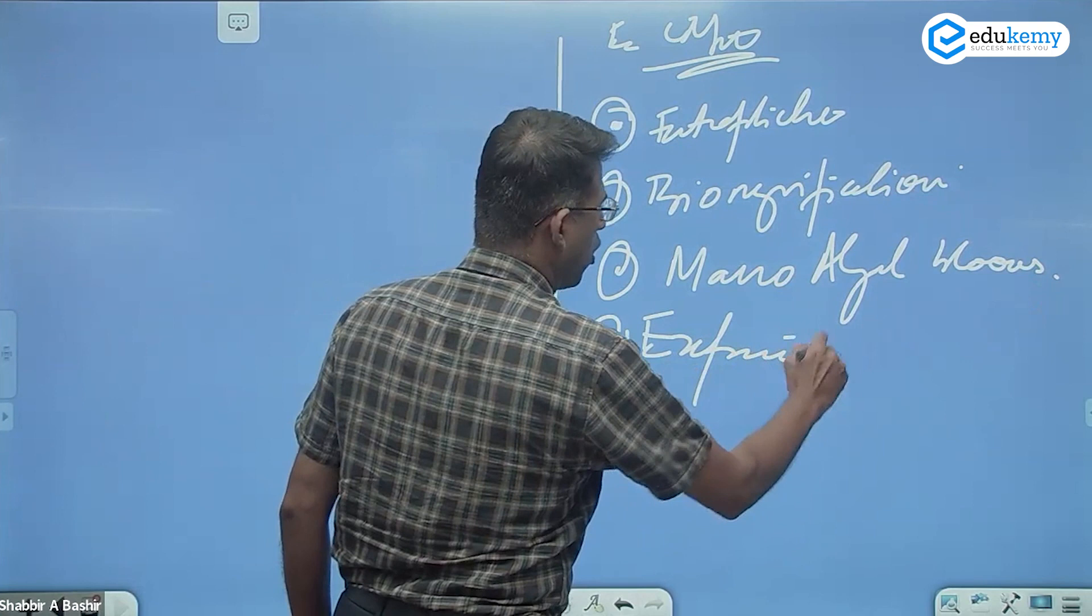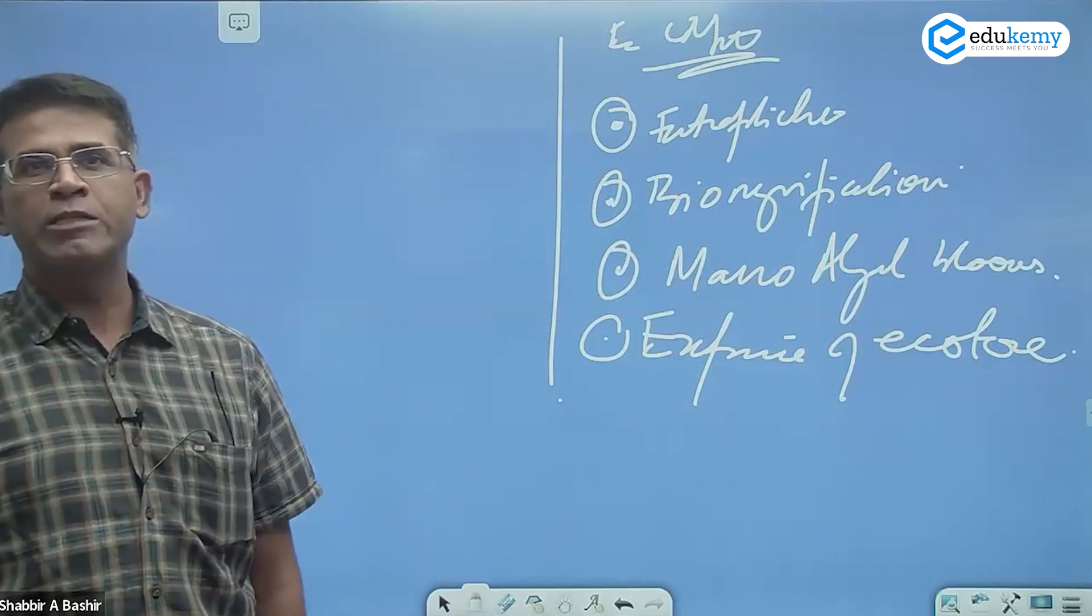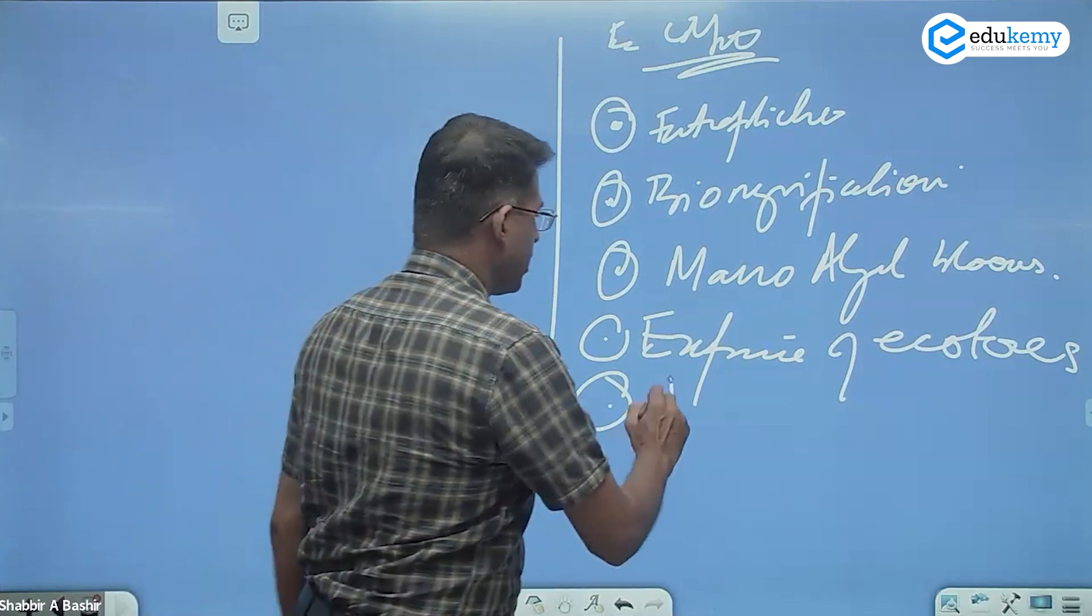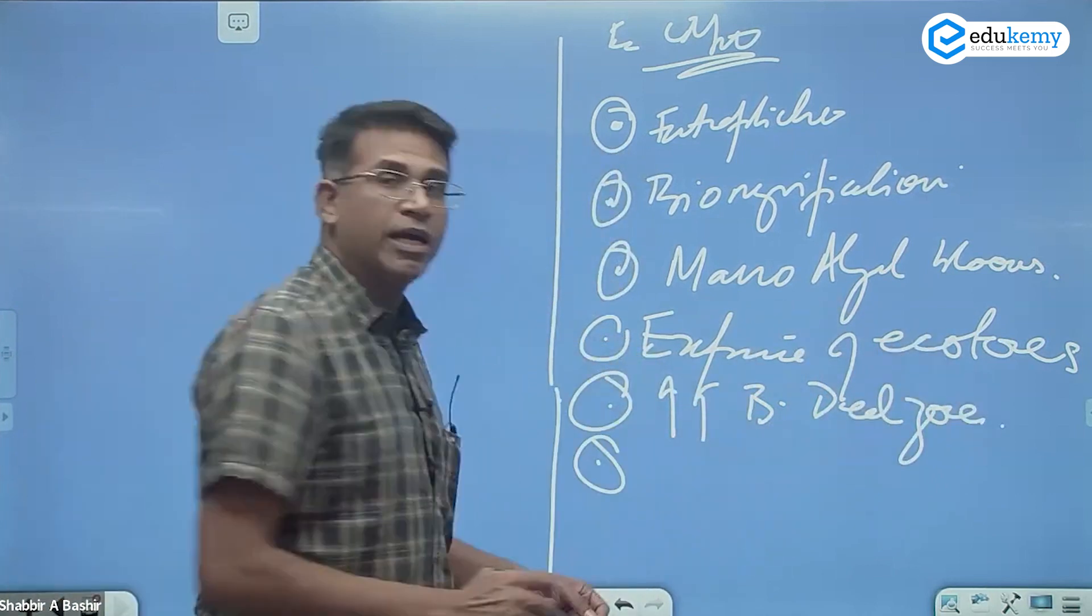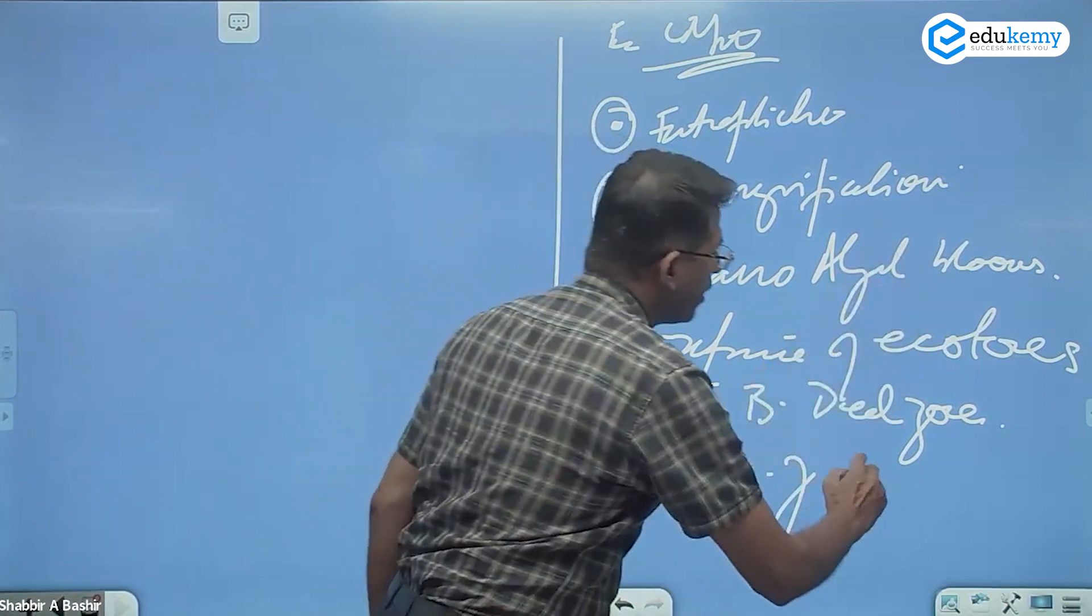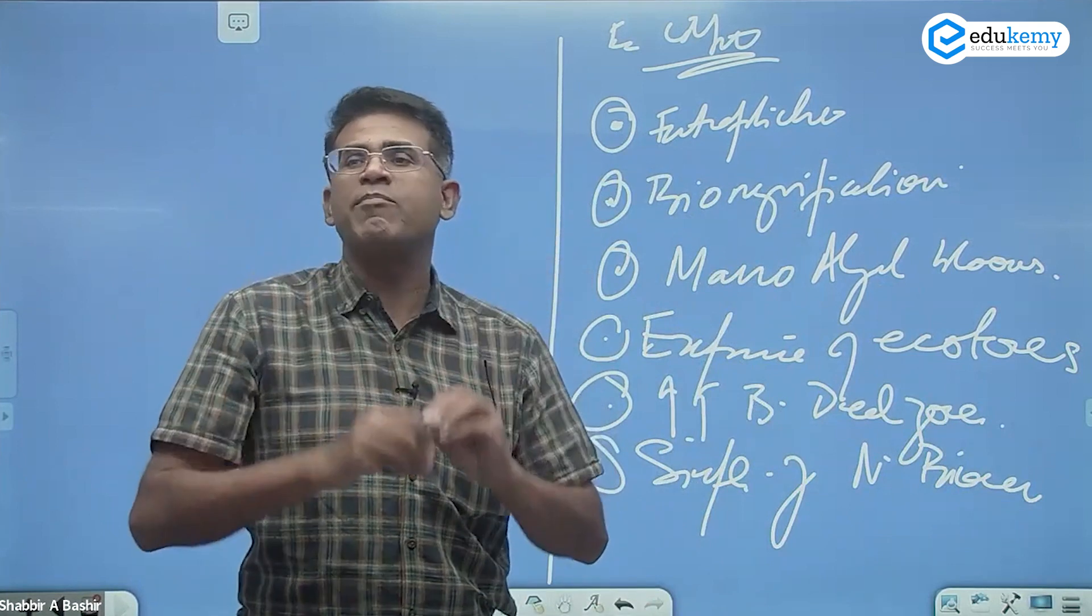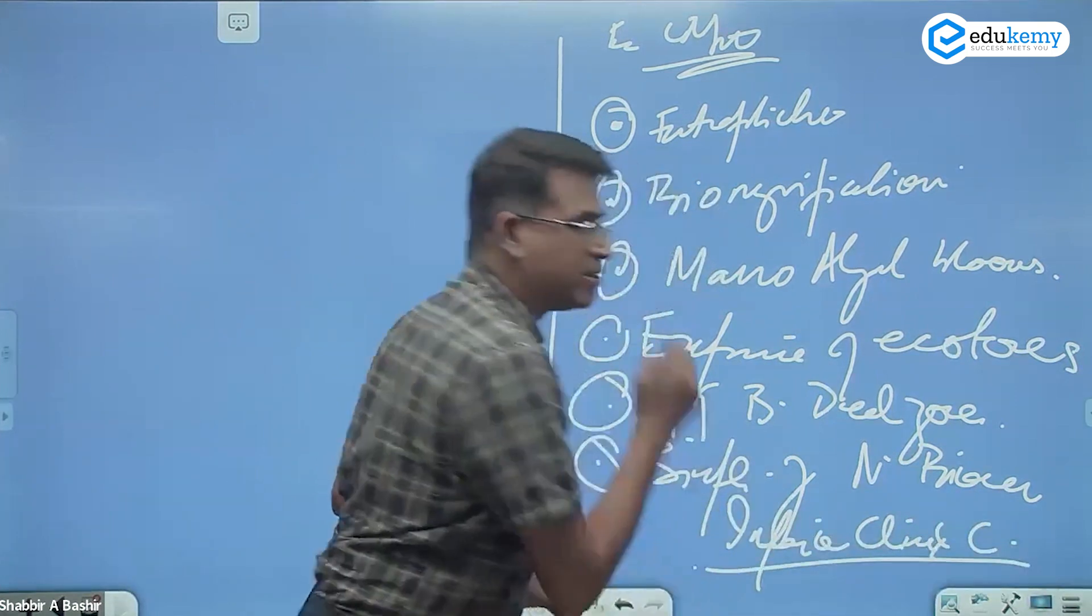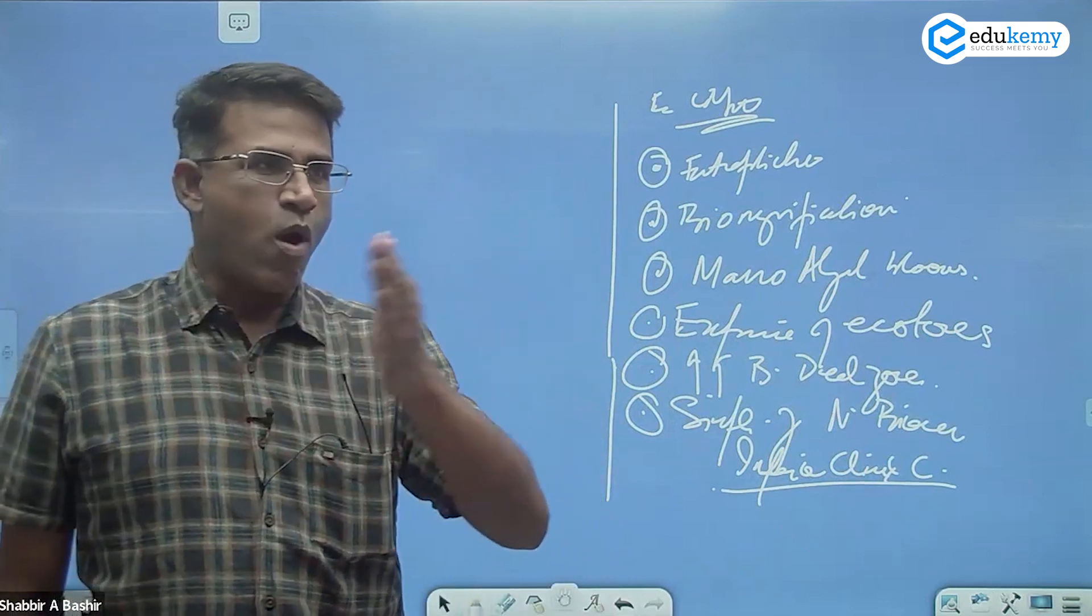Expansion of ecotones - the transition zones are expanding. Dead zones - increase in biological dead zones. Example will be simplification of natural biomes. We will have inferior climax communities.